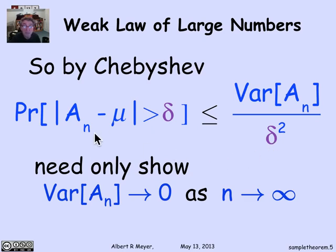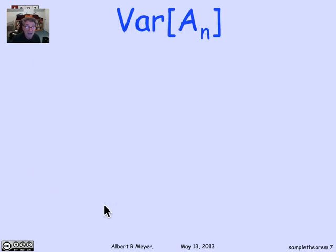So we've reduced the proof of the law of large numbers to proving that the variance goes to 0 as n approaches infinity, where A_n is the average of n identically distributed variables with common mean mu and standard deviation sigma.